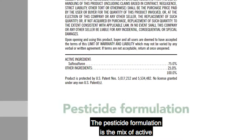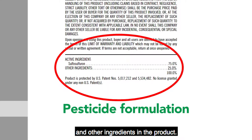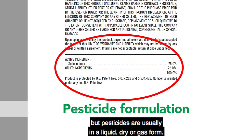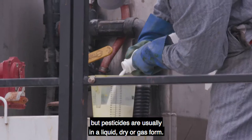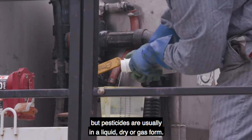The pesticide formulation is the mix of active and other ingredients in the product. There are many types of formulations, but pesticides are usually in a liquid, dry, or gas form.